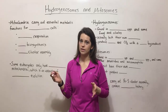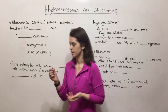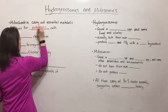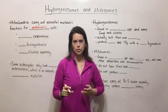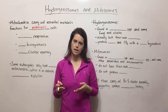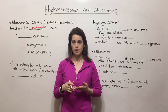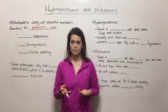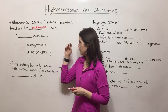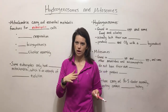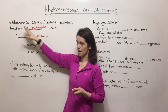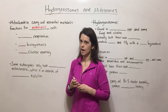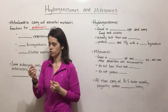Mitochondria are organelles that carry out essential metabolic functions in eukaryotic cells. Eukaryotic cells are found in multicellular organisms like plants, animals, and fungi, and there are also many unicellular eukaryotes — various kinds of parasites and algae. These are distinct from prokaryotic cells like bacteria. It is eukaryotic cells that have organelles like mitochondria, and some of the metabolic functions mitochondria carry out include aerobic respiration, which is probably the function you're most familiar with.